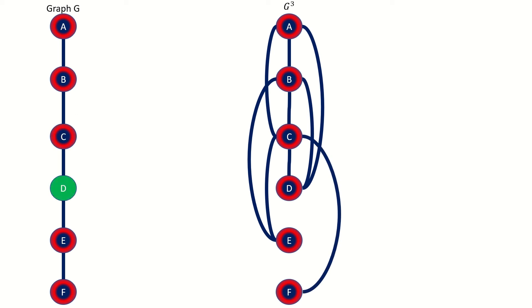On to vertex D. Vertex D had a distance of 1 to vertices C and E, meaning that it connects to those vertices in our third power graph. Vertex D had a distance of 2 to vertices F and B, meaning that it also connects to those vertices. Finally, vertex D had a distance of 3 to vertex A, meaning that it connects to vertex A in the third power graph. Note that some of these connections we've already drawn in — that'll be the case for the next few vertices as well.